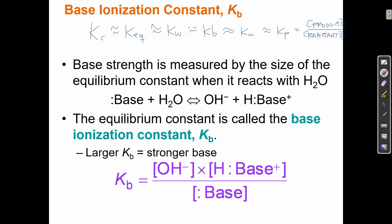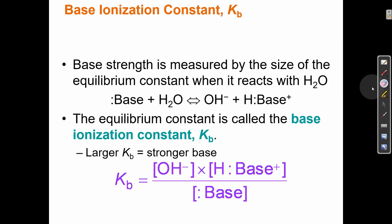Don't get confused by all the different letters. We're now talking about the base ionization constant Kb, but it's just K — products over reactants. In the base equilibrium expression, water is a pure liquid, so it gets left out of the expression. Kb is the same as the K from the last chapter, just for bases.